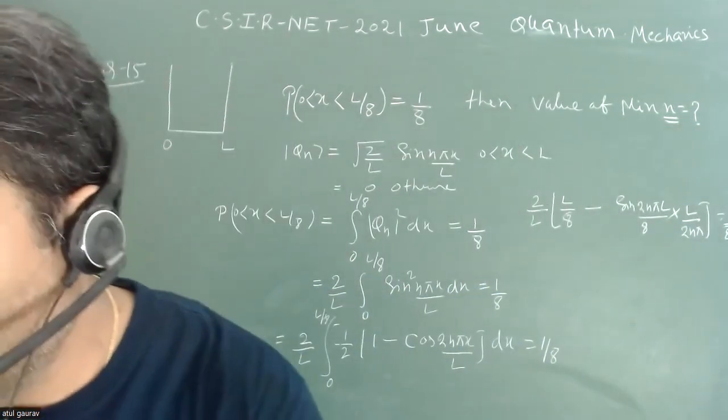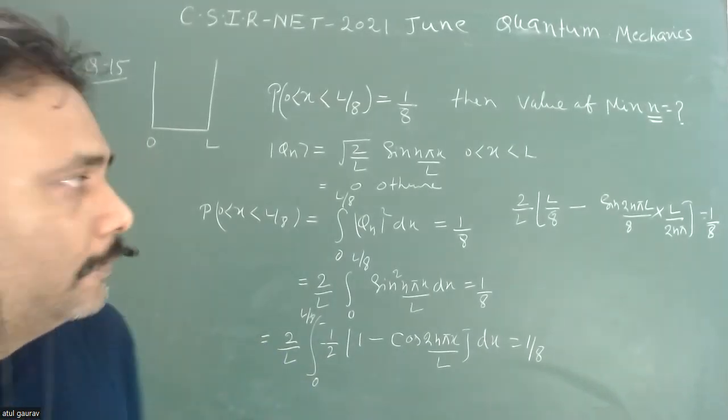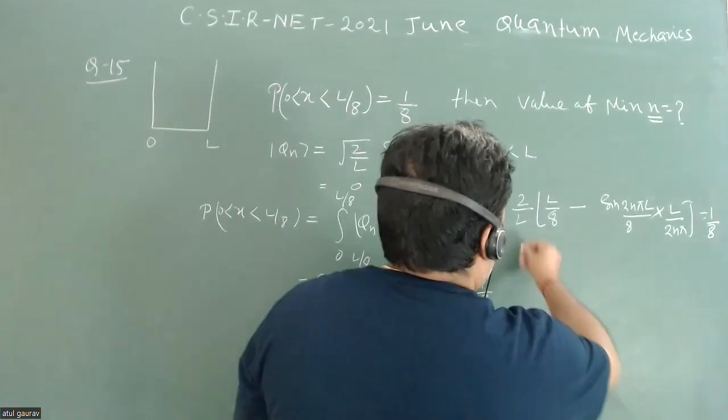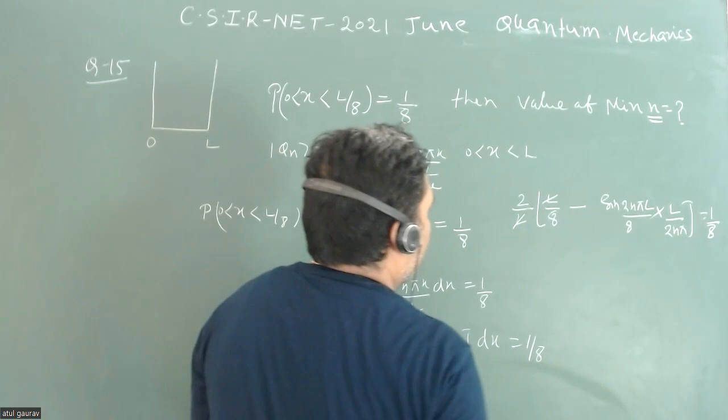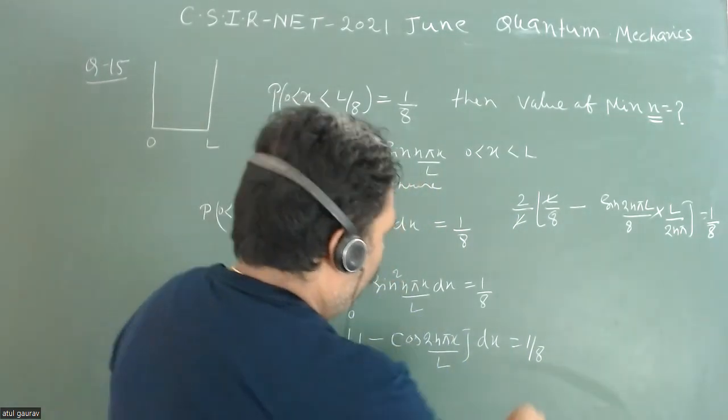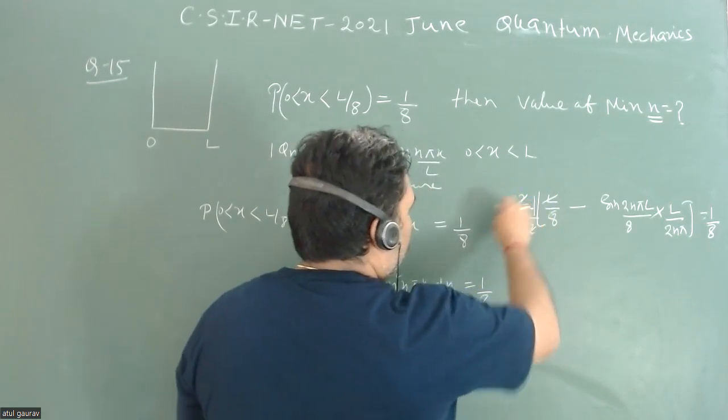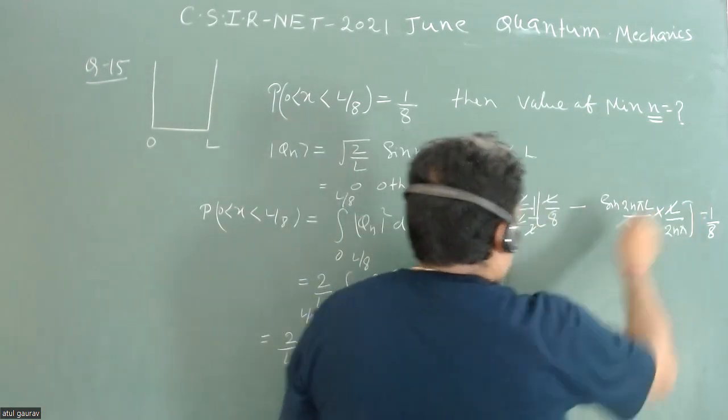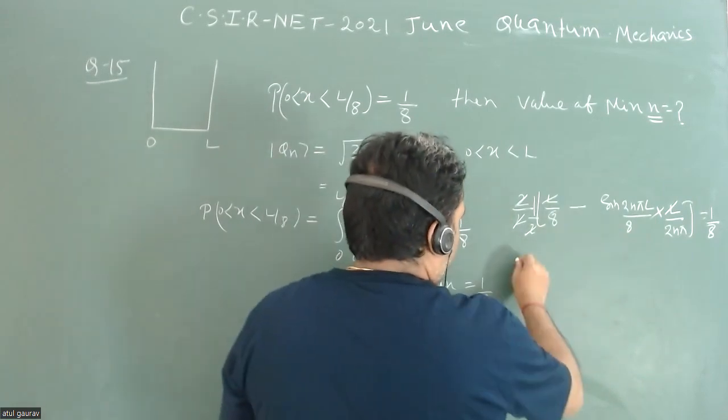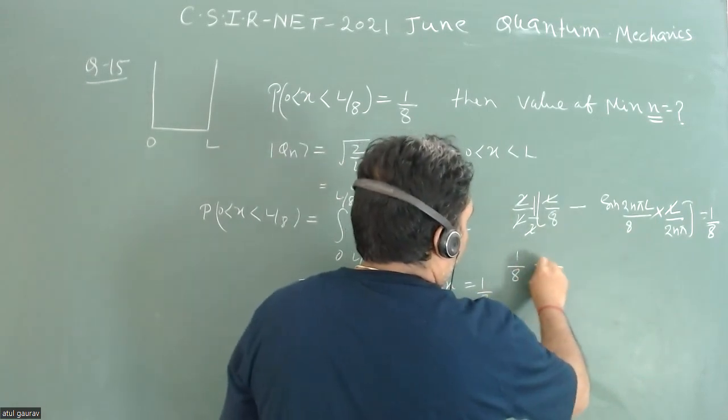So this value is 1/8. Now this will be cancelled out, and 1/2 is also there because this part is also there. So this 2 is also cancelled, this L is also cancelled. So 1/8 minus